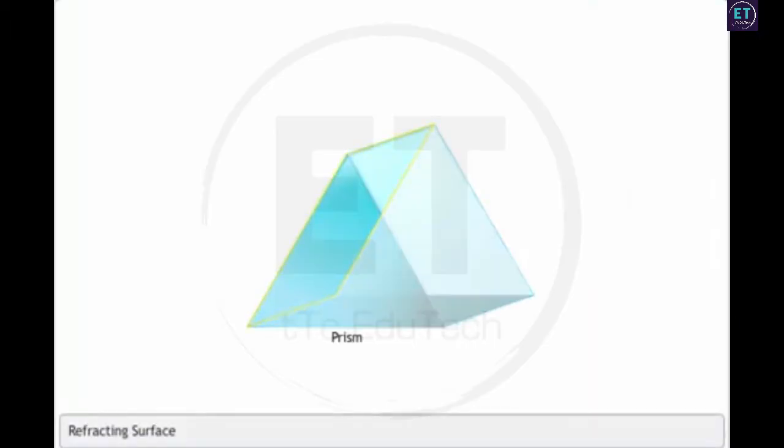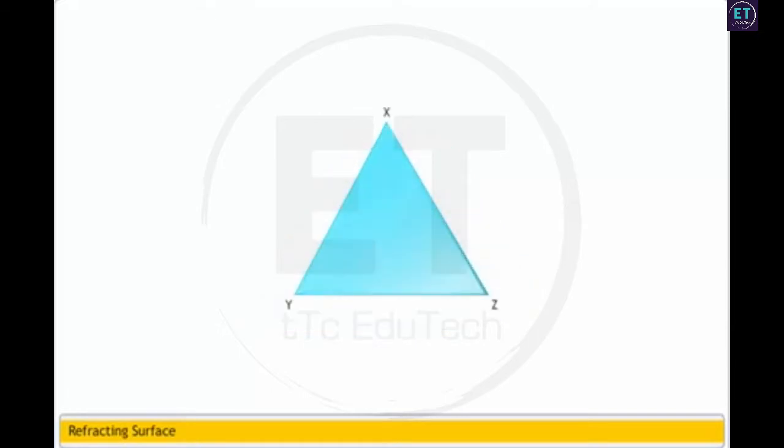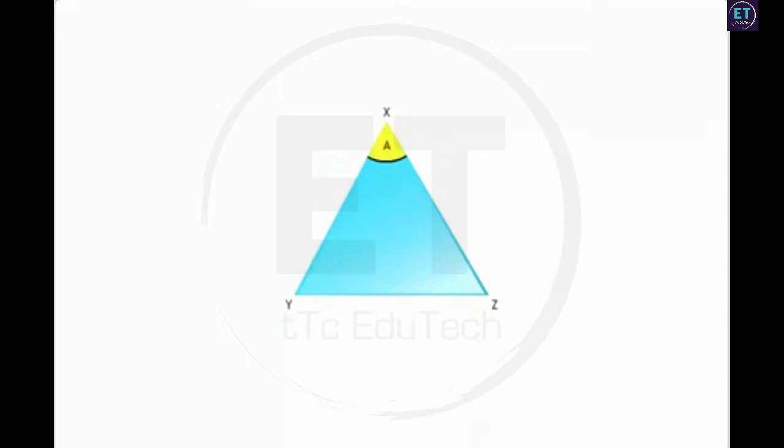The rectangular faces in a triangular glass prism are known as refracting surfaces. The line along which the two refracting surfaces meet is known as the refracting edge of the prism. The angle between the two refracting surfaces, denoted by the capital letter A, is called the angle of the prism or the refracting angle. The base of the prism is the rectangular face that does not take part in refracting light.